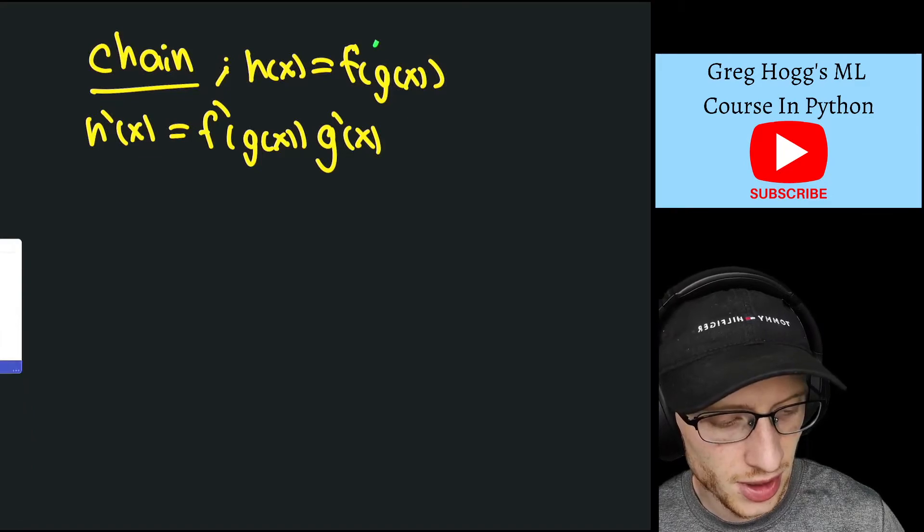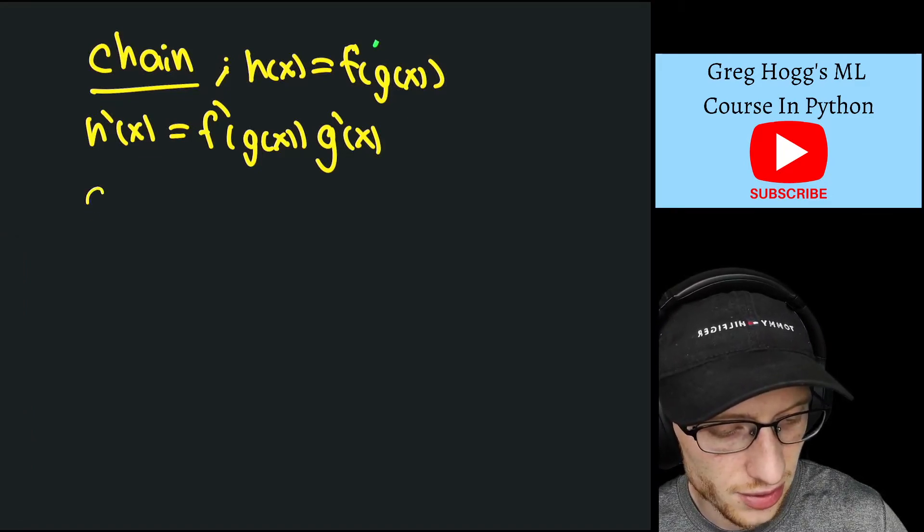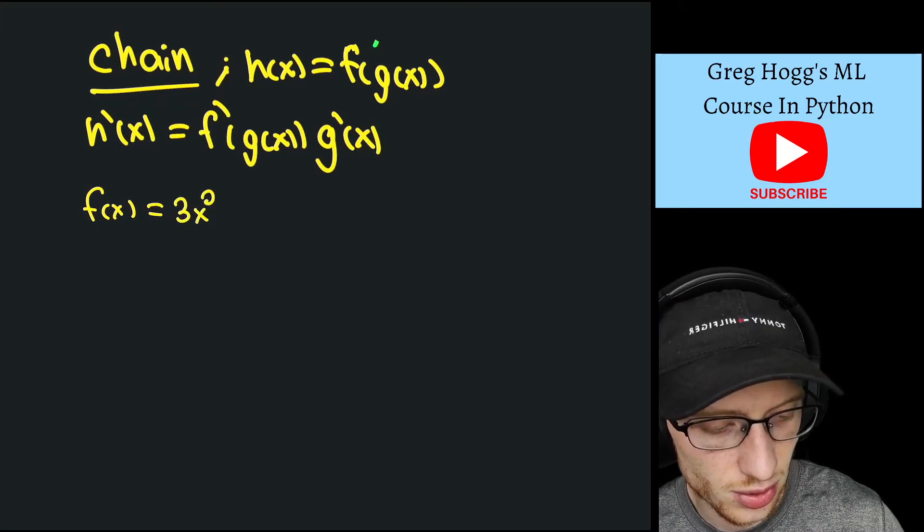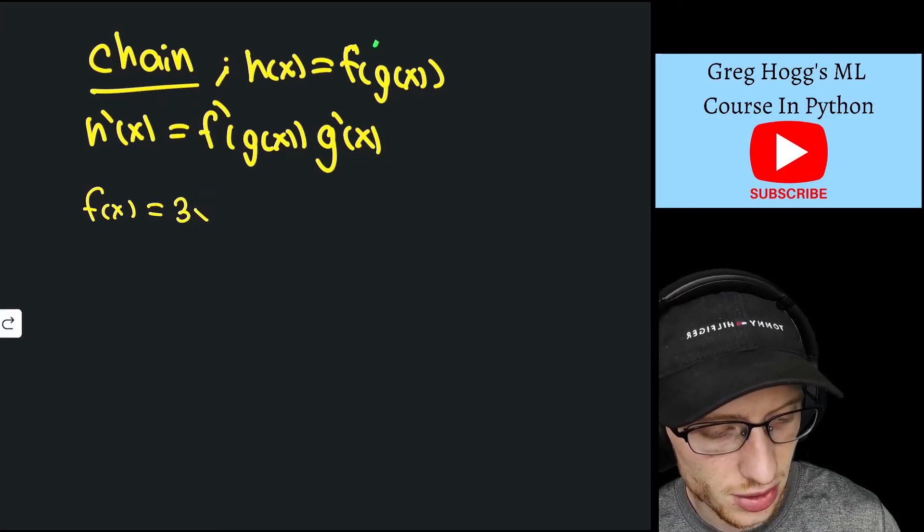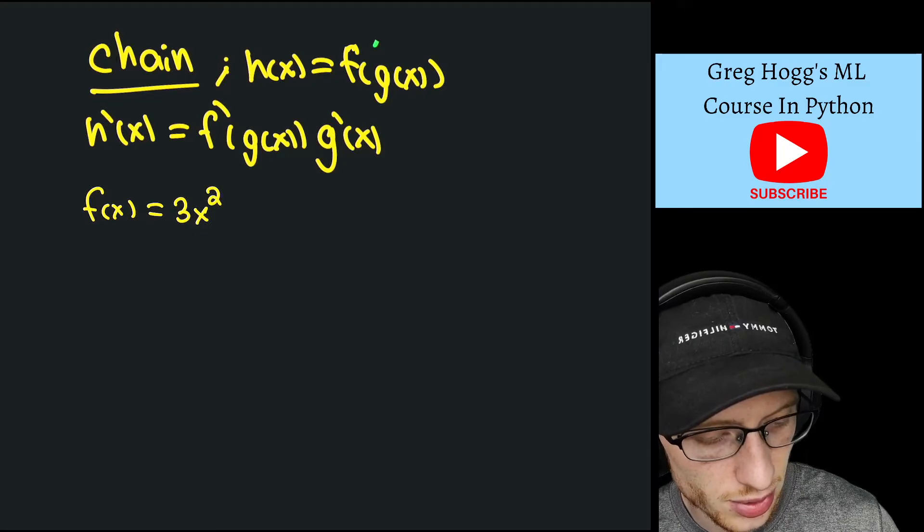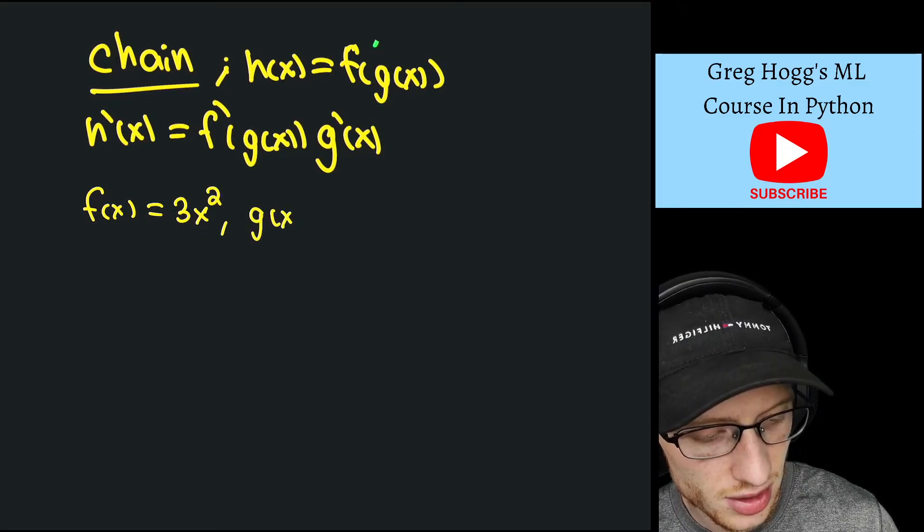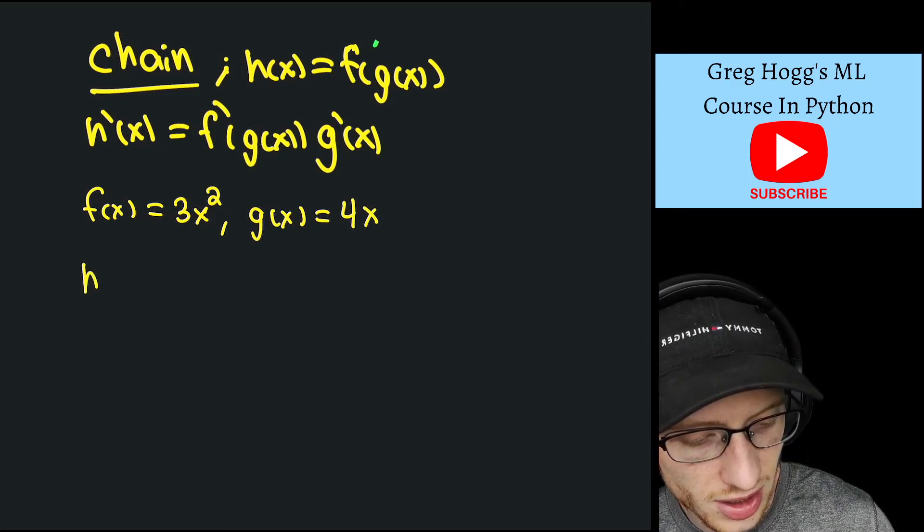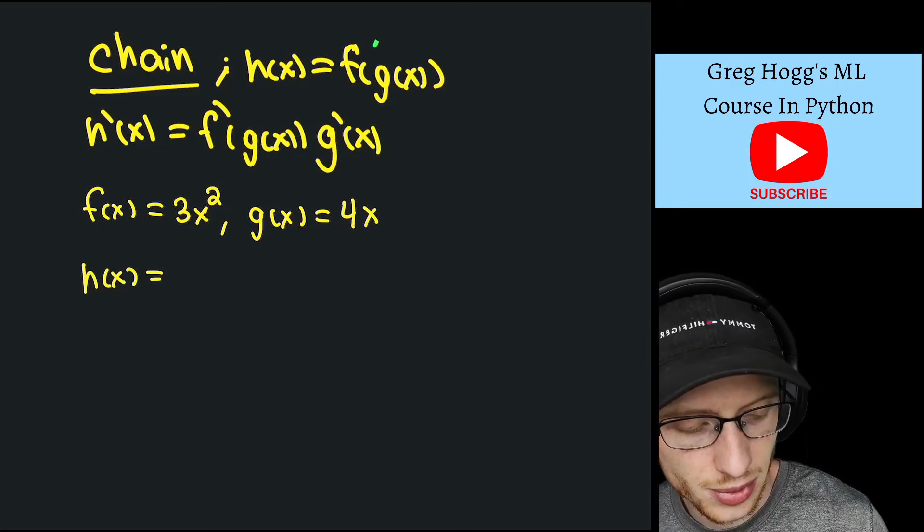So basically if we had, let me stick with the same color, so if we had f(x) is equal to 3x squared, and g(x) is equal to say 4x, well that means that h(x) must be equal to, we take, we do f(4x).